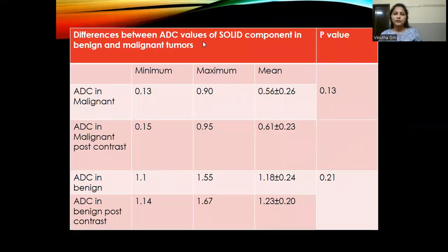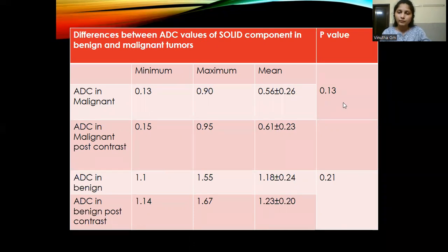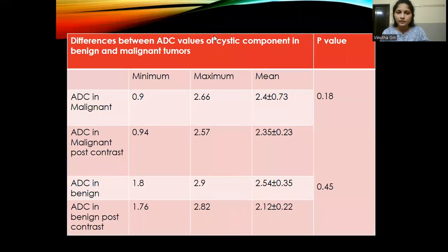ADC values were also obtained separately for solid and cystic components in both benign and malignant tumors. For the solid components of malignant tumors, the p-value for pre- versus post-contrast ADC was also not significant, and the same was true for benign tumors. For the cystic components, statistical significance was likewise not obtained for pre- and post-contrast imaging.